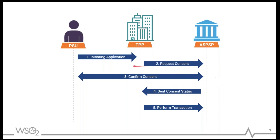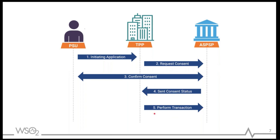If the PSU confirms consent, the TPP receives the consent status and performs the transaction—in this case, getting account details. This is a high-level view of how the SCA process works. We're looking at step three, where strong customer authentication happens. The request for consent and getting the transaction are all done behind the scenes, but the SCA part is with the customer—it's a facade presented to the PSU in the Open Banking space.